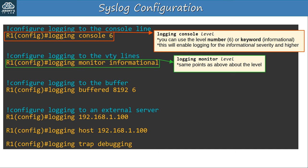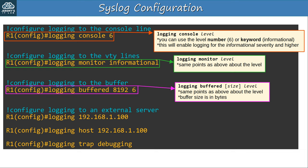Next, the command to configure logging to the VTY lines is 'logging monitor' followed by the level. You can specify the level number or keyword — this time I used the keyword 'informational' instead of the number 6. To configure logging to the buffer the command is 'logging buffered' followed by the size of the buffer in bytes and the level. The size is optional; if you don't specify it, the device uses its default size. Be careful not to set the buffer size too large, as that can take system memory away from other essential operations.